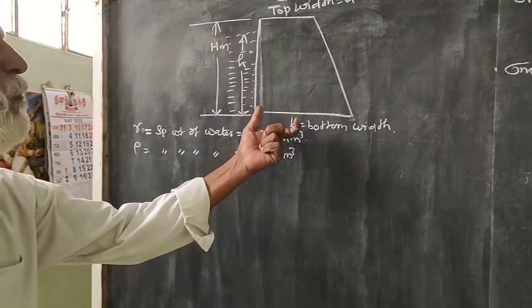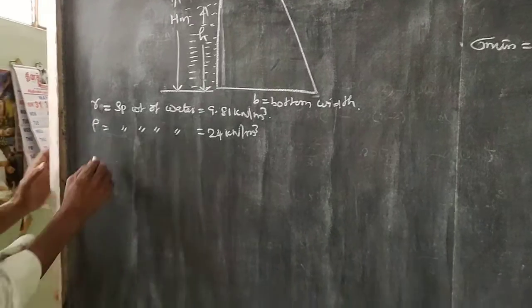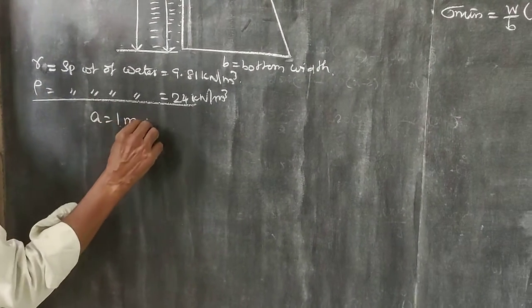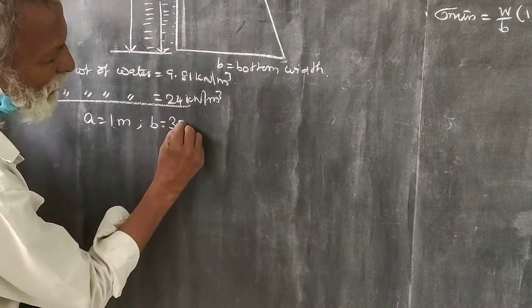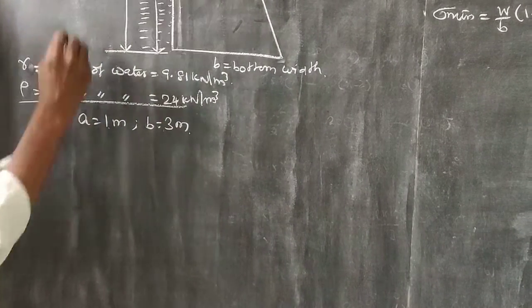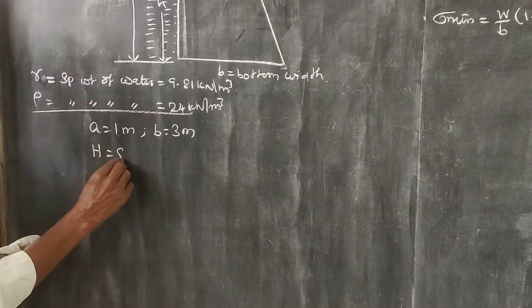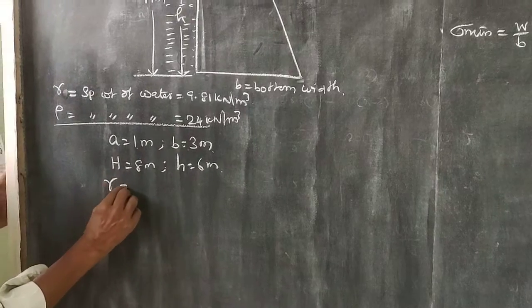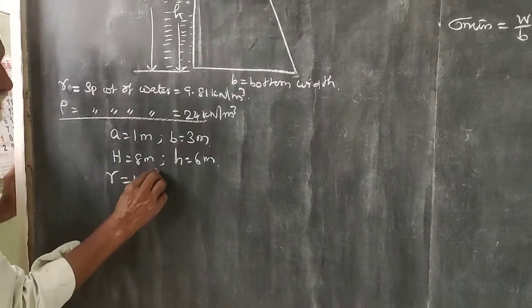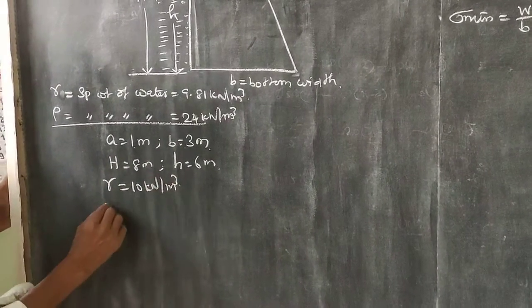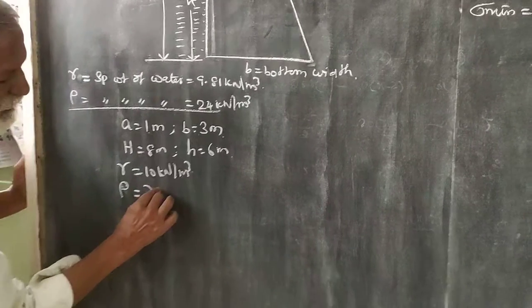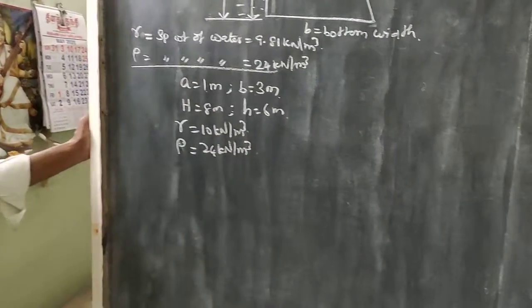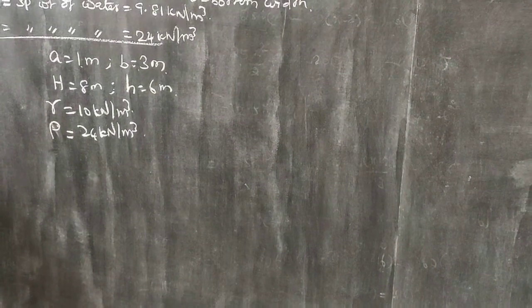B is the bottom width. The top width is 1 meter. Bottom width B is 3 meters. Dam height H is 8 meters. Water level is 6 meters. Specific weight of water is 10 kN per meter cube, and specific weight of masonry is 24 kN per meter cube. Find the maximum and minimum stress.